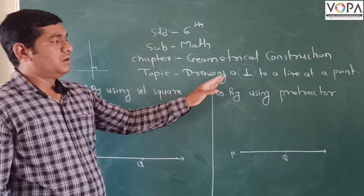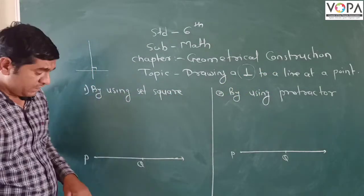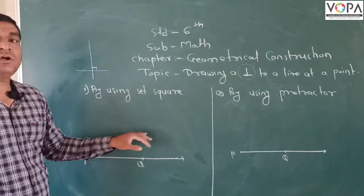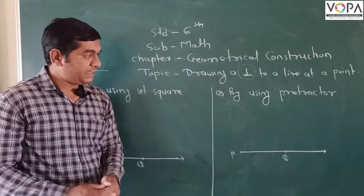So we want to draw a perpendicular to the line at a given point. See, PQ is a line and at point Q we want to draw another line.